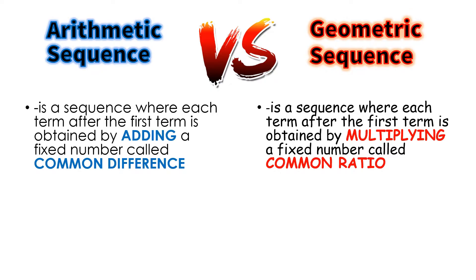In the arithmetic sequence, you have the common difference, while in the geometric sequence, you have a common ratio. So meaning, if you are adding or you have a common difference on your sequence, that is arithmetic sequence. If you are multiplying or you have a common ratio on your sequence, then that is geometric sequence.